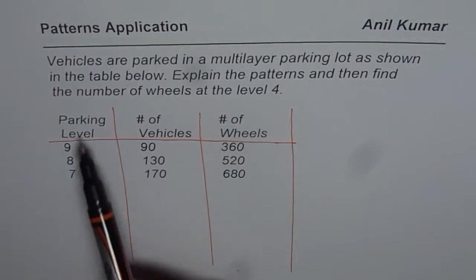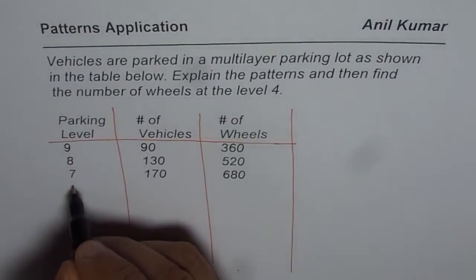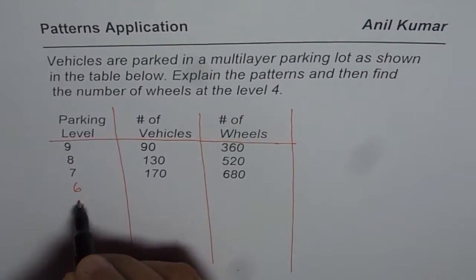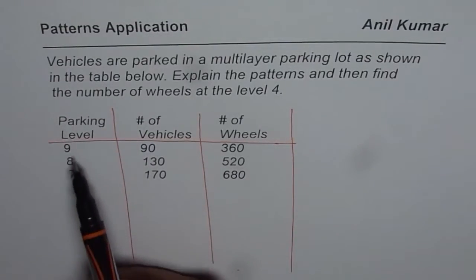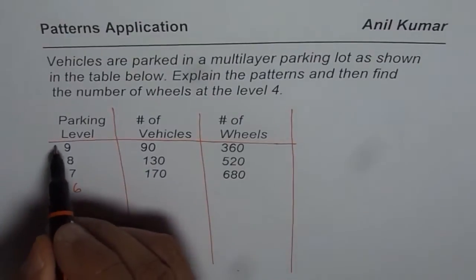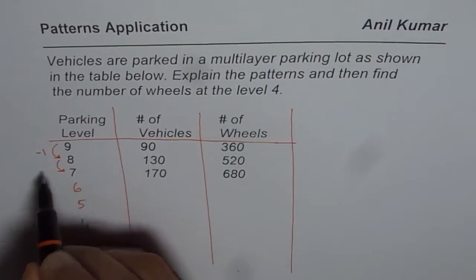Now if you see the pattern, parking levels are 9, 8, 7. So they could go down like 6, 5, 4. The pattern here is: parking level is going down by 1, so it's minus 1 each time. That is the pattern.